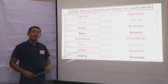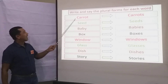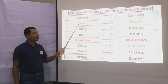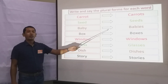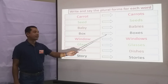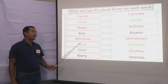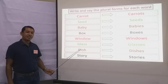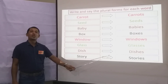My dear students, I will repeat again. Now try to say the words with me. Carrot — carrots. Seat — seats. Baby — babies. Box — boxes. Window — windows. Glass — glasses. Dishes. Story — stories.